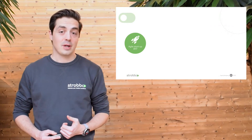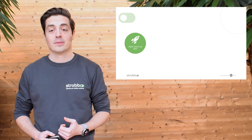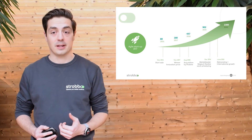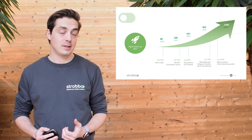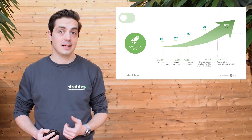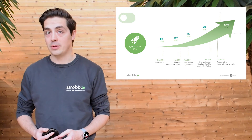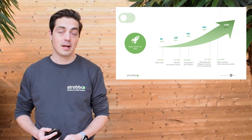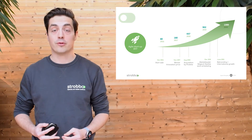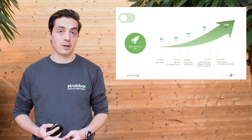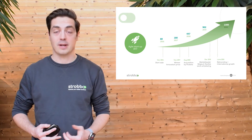Strobo started in 2016 when we got our first customers. We started selling in 2017, received our first innovation award that same year, and in 2018 we were acquired by a company called ProTime. Under the wings of ProTime we grew further and became the market leader in 2019 for planning flexible workforces.